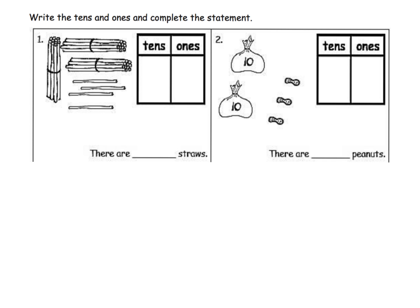Here we're going to write in our place value chart the tens and the ones. These are sticks and we've got one, two, three groups of ten, so we're going to put 3 tens. Then we've got one, two, three, four individual ones. So we've got three tens and four ones. How many straws are there? There are 34 straws.